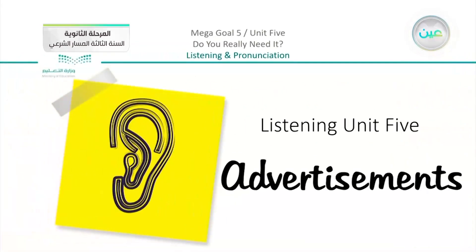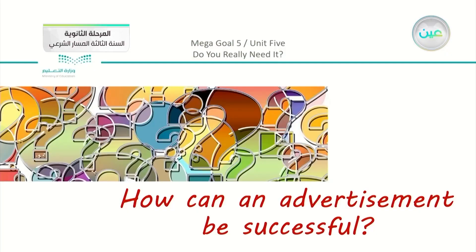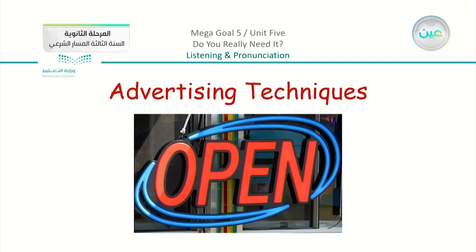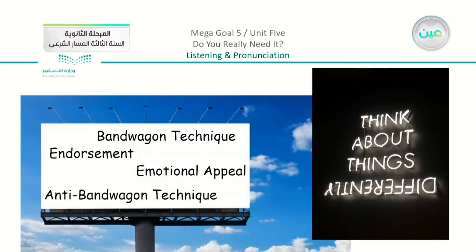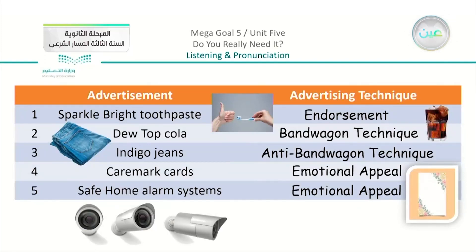Now we're going to start with what we had yesterday in the last lesson — the listening part. In the listening lesson we had something about advertisements, starting with the question: how can an advertisement be successful? This was mainly about advertising techniques in a lecture. We covered the bandwagon technique, the anti-bandwagon technique, endorsement, and emotional appeal, which we matched with different types of advertisements. We listened to the lecture and identified the technique each product uses: Sparkle Bright toothpaste uses endorsement, Do Top Cola uses bandwagon, Indigo Jeans uses anti-bandwagon, and both Caremark Cards and Safe Home Alarm Systems use emotional appeal.